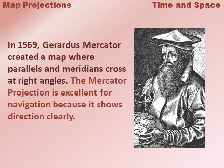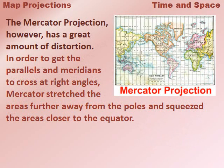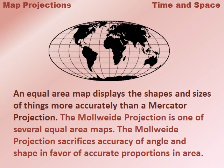In 1569, Gerardus Mercator created a map where parallels and meridians cross at right angles. The Mercator projection is excellent for navigation because it shows direction clearly. However, the Mercator projection has a great deal of distortion. In order to get the parallels and meridians to cross at right angles, Mercator stretched the areas further away from the poles and squeezed the areas closer to the equator.